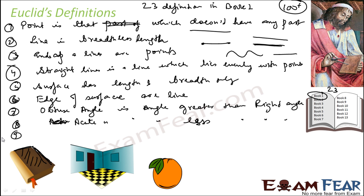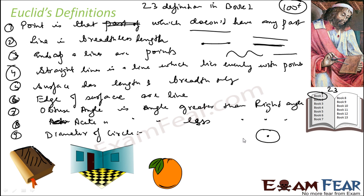He defined the diameter of a circle. The diameter of a circle is a straight line drawn through the center of the circle and terminated on both sides by the circumference. This is the diameter.